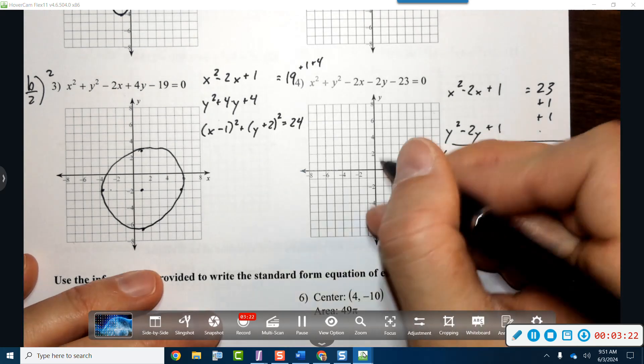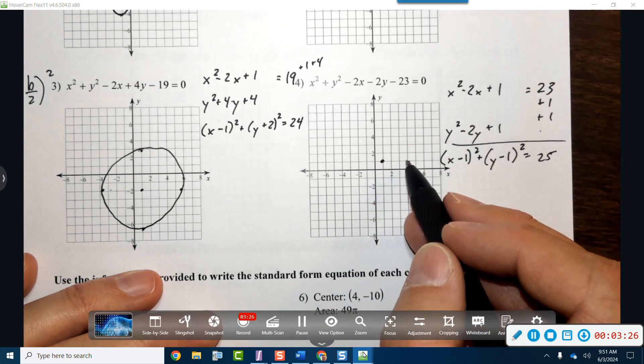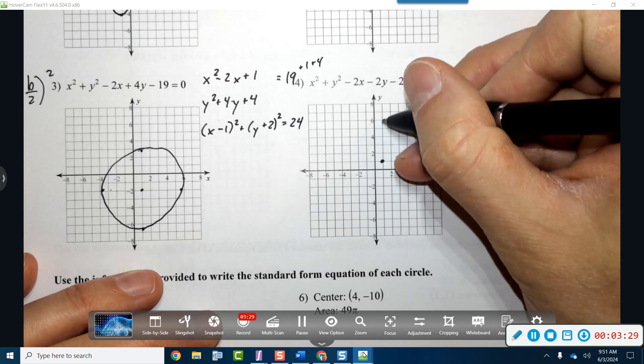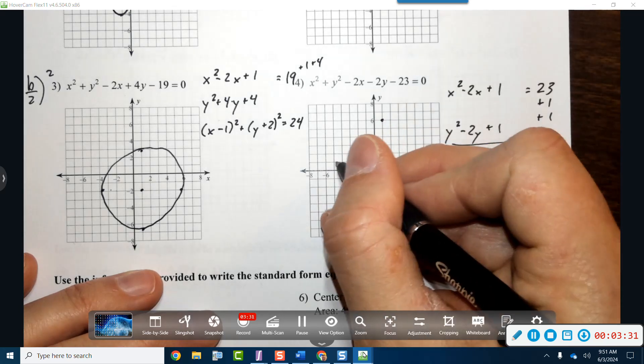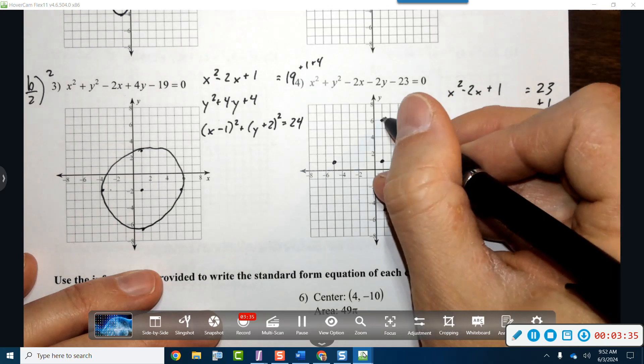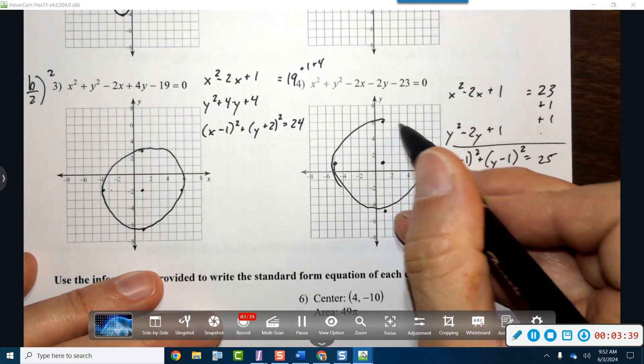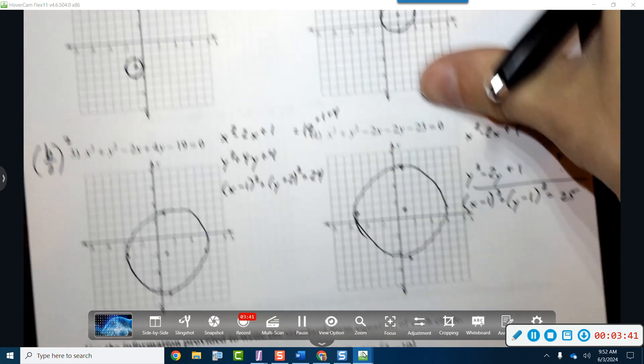We're gonna go ahead and go to positive 1, positive 1, and then now we're going full 5: 1, 2, 3, 4, 5 to 6 from 1. We'll go up to 6, from this guy we're gonna go to negative 5, and this guy we're gonna go to negative 5. That should produce a circle and I just missed it, and there we go.